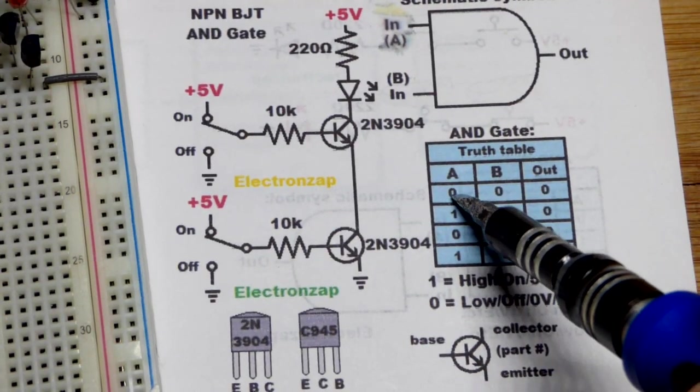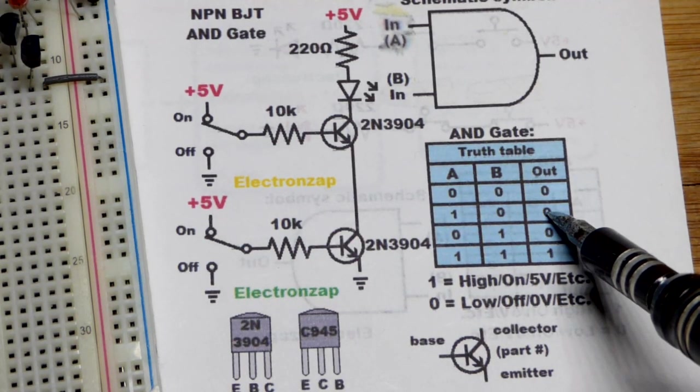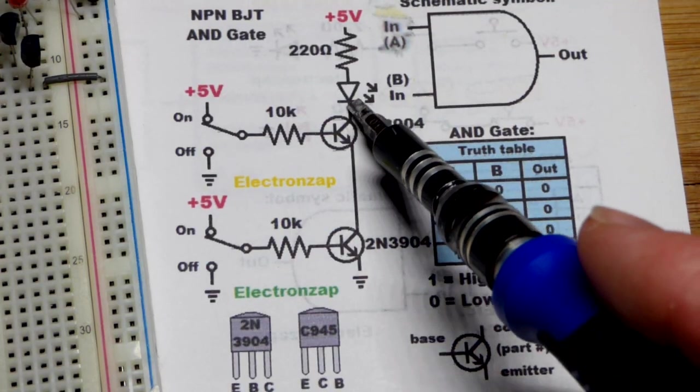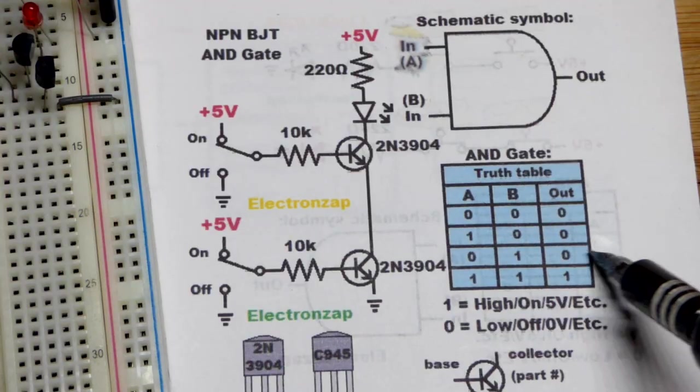But in this case, both transistors off, output's off. One of them's on, then it outputs off. Output is this part right there. Conducts or doesn't for the most part that the LED is attached to.